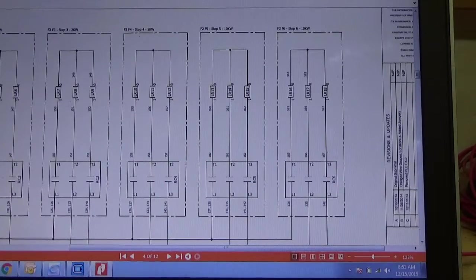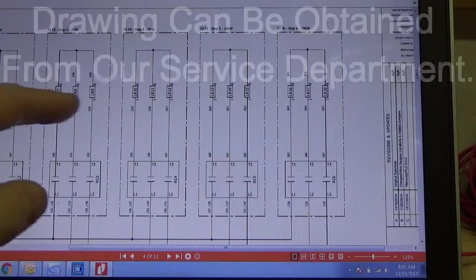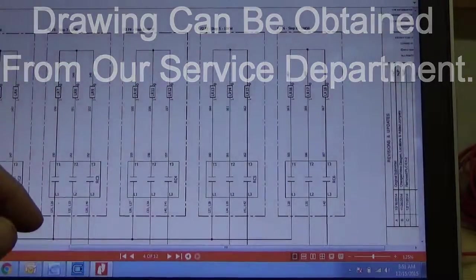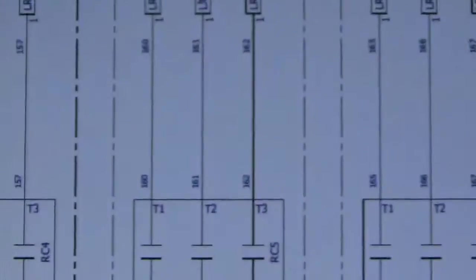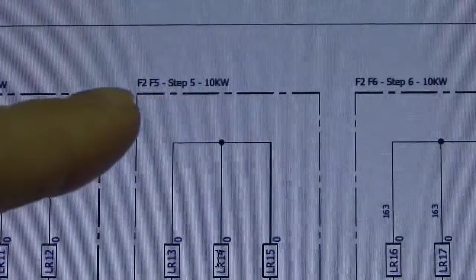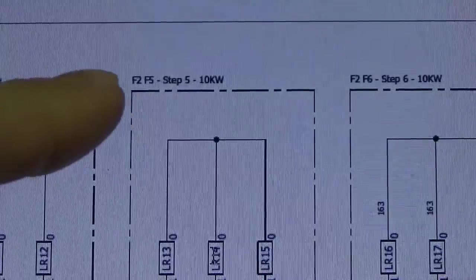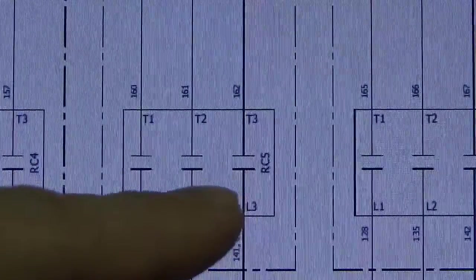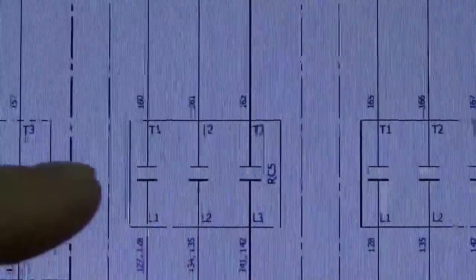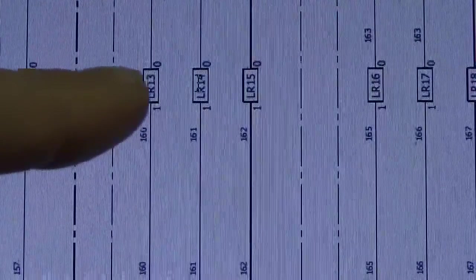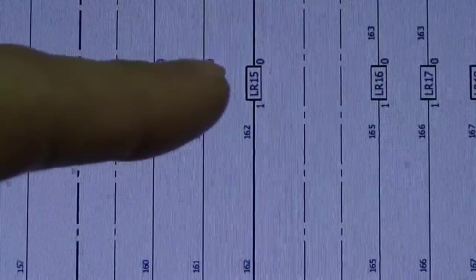Here I went to our drawings where we're showing our load resistors and load fuses. Now here you can see, this is our first 10 kW step. You can see it's step five. We're going to be looking at fuse two through five, resistor contactor number five, and resistors LR13, LR14, and LR15.